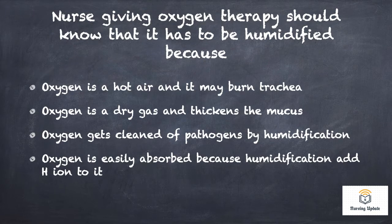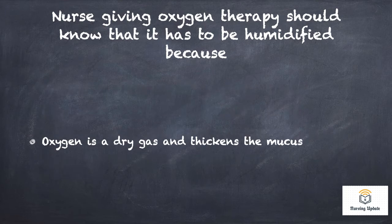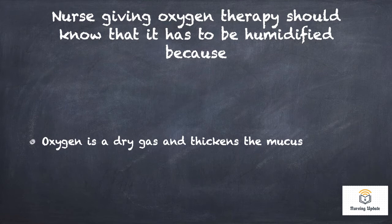When giving oxygen therapy, the nurse should know it has to be humidified. Options: A — oxygen is hot air and may burn the trachea; B — oxygen is a dry gas and thickens the mucus; C — oxygen gets cleaned of pathogens by humidification; D — oxygen is easily absorbed because humidification adds hydrogen ions to it. The answer is B: oxygen is a dry gas and thickens the mucus. We pass oxygen through sterile water to humidify it, because dry oxygen dries mucous membranes and causes cracked lips.